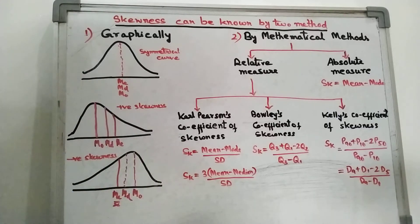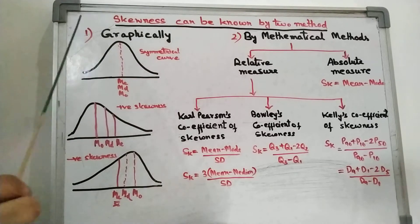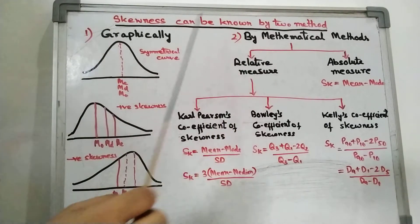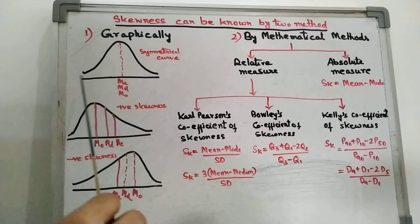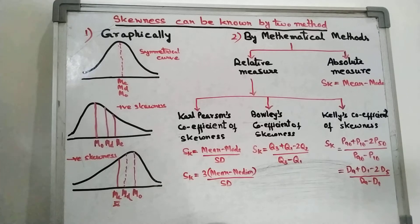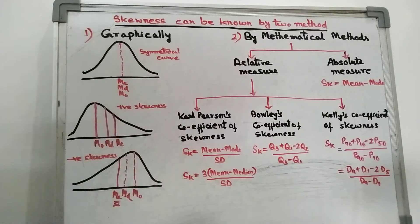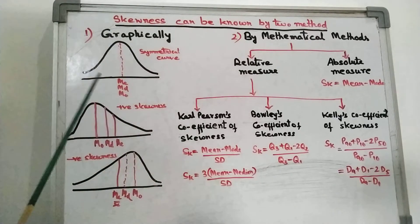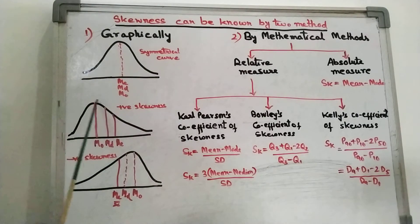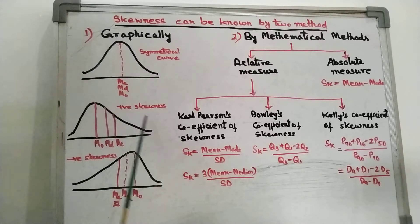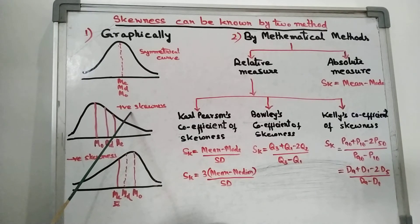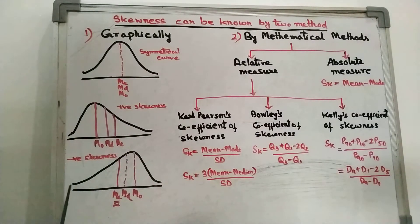This is the way of knowing skewness in a distribution. Skewness can be known by two methods — one is graphical and the other one is mathematical. In the graphical method, you just need to plot the frequency distribution curve. If it is this shape — that means symmetrical — then we can say skewness is not there, skewness is 0. If the curve is positively skewed, we can say it is a positively skewed distribution, or it is a negatively skewed distribution.